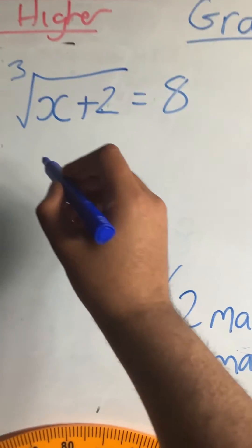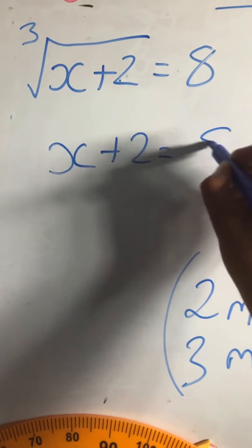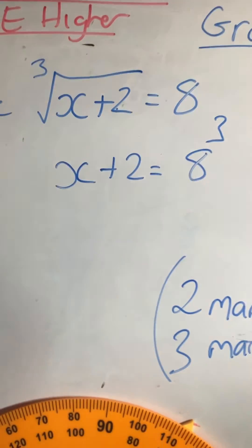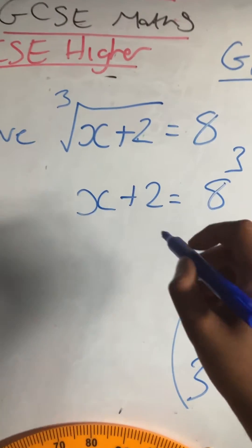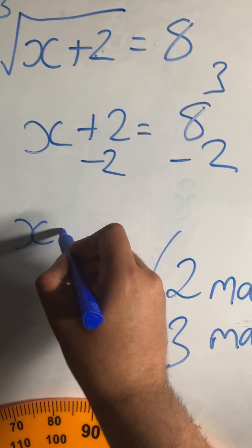Cubing both sides, I would get x plus 2 is equal to 8 cubed. Then I would subtract 2 on both sides to work out what x is, so x is equal to 8 cubed minus 2.